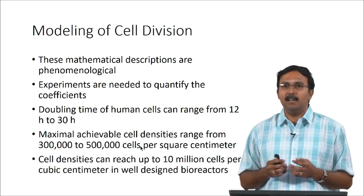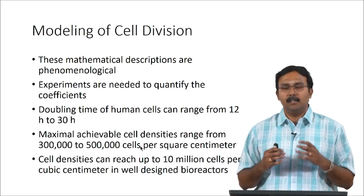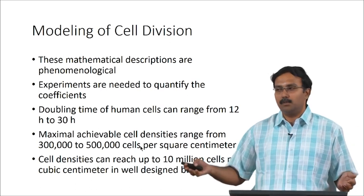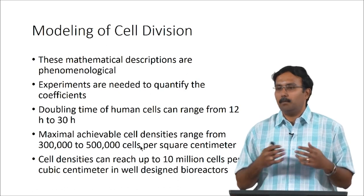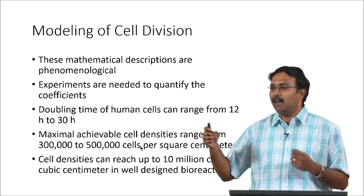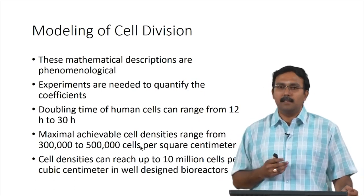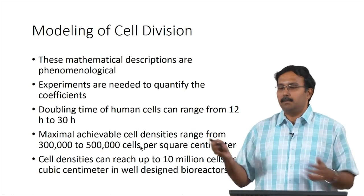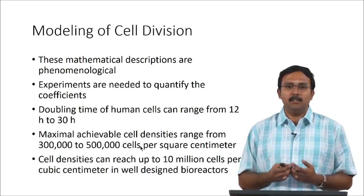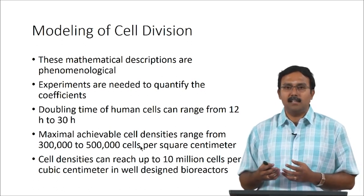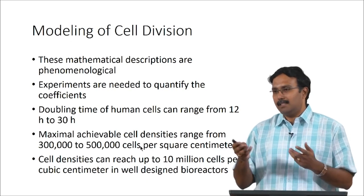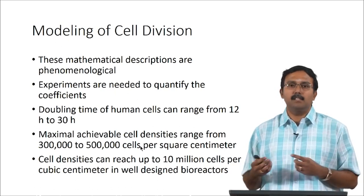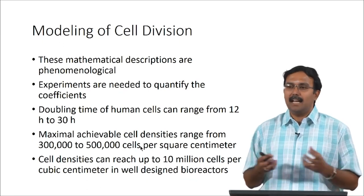The doubling time of human cells ranges from about 12 hours for progenitor cells up to 30 hours for less proliferative cells, with exceptions having much larger doubling times. The maximum achievable cell density on a surface is somewhere between 3 to 5 lakh cells per square centimeter, dependent on cell size. Cell density can reach up to 10 million cells per cubic centimeter in a well-designed reactor system — which is why spinner flasks enable very high cell concentrations.